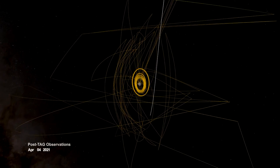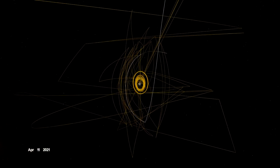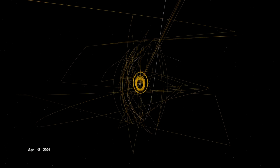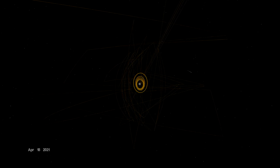Before departing Bennu, OSIRIS-REx was given one final task. On April 7th, it flew over site Nightingale to observe how the sample collection event had changed the surface. And with that, OSIRIS-REx had recorded its mark on Bennu and spun the last strand of its web.